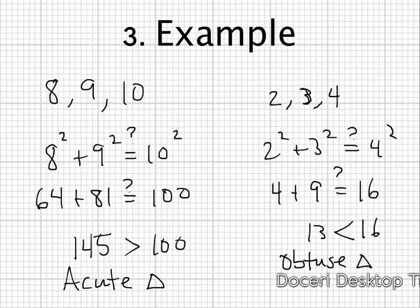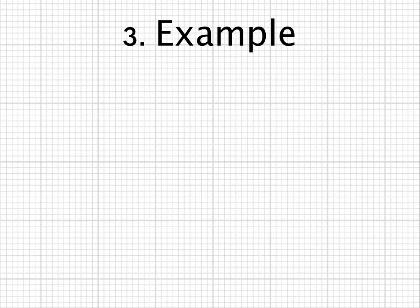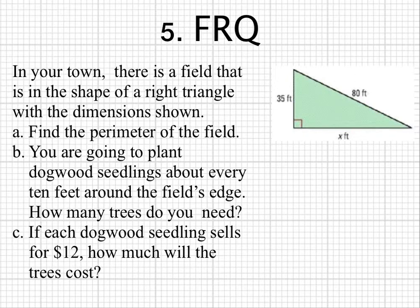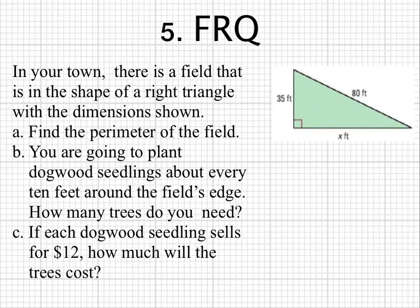So those are a couple of examples for you. Here is your multiple choice question — go ahead and pause the video to answer it. Here is your free response question: In your town there is a field in the shape of a right triangle with dimensions 35 feet, 80 feet, and a hypotenuse x feet for the third side. Find the perimeter of the field. You are going to plant dogwood seedlings about every 10 feet around the field's edge — how many trees do you need? And if each dogwood seedling sells for $12, how much will the trees cost? That's your questions for today. Hope you have a good night and we'll see you in class.